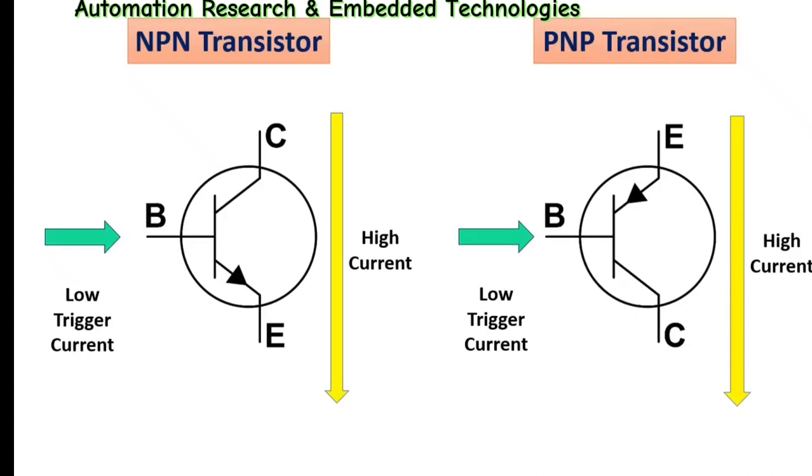PNP transistors allow electricity to pass from the emitter pin to the collector pin. They are represented in a schematic with a line for a base, a diagonal line connecting to the base, and a diagonal arrow pointing towards the base.